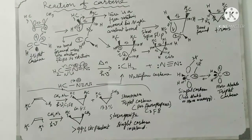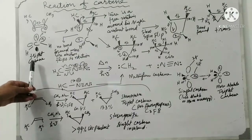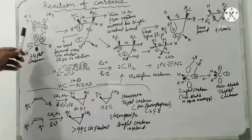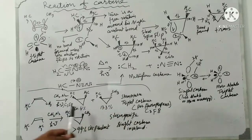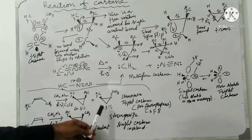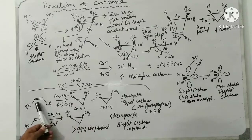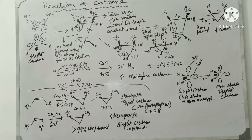This is how the triplet carbene reacts with cis-2-butene. When perfluoropropane is used as solvent, a mixture of two products is obtained. The cis product is formed in greater proportion compared to the trans product. This explains the formation of both the cis and trans products.